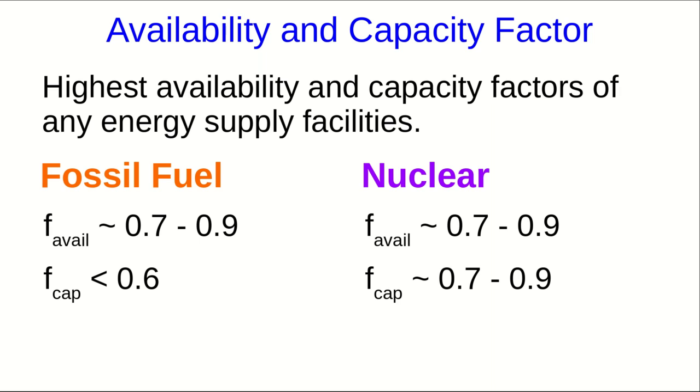However, their capacity factors can differ significantly. Nuclear power plants tend to have capacity factors that are approximately equal to their availability factors. In other words, they are run almost all the time that they're available to run. But fossil fuel plants tend to have capacity factors considerably lower than their availability factor. That tells you that they are often shut down on purpose, even when they could be turned on.